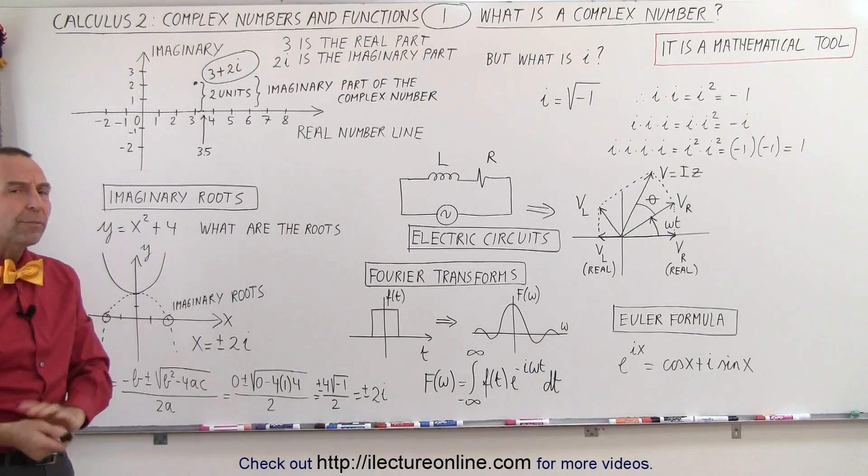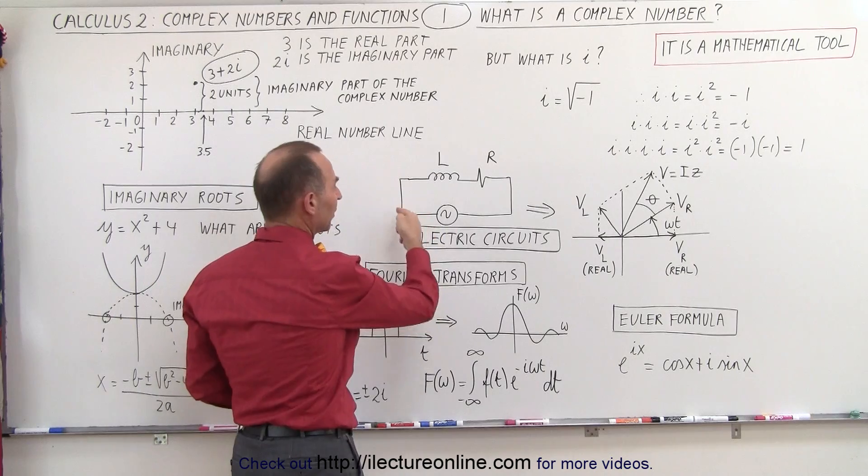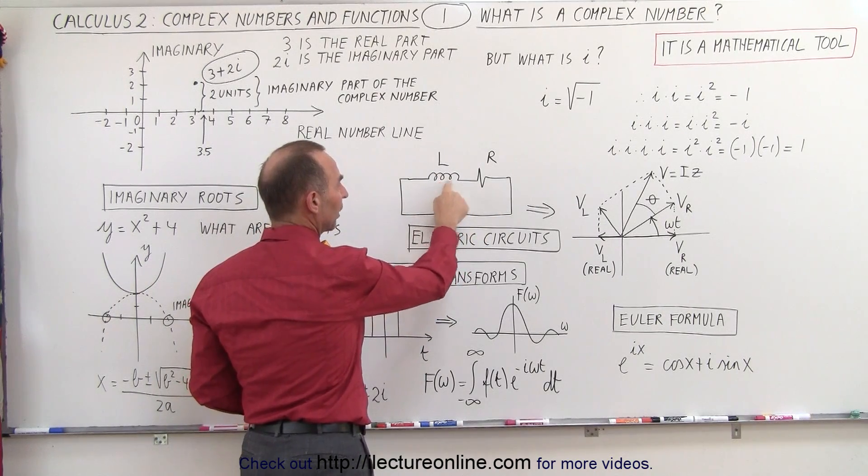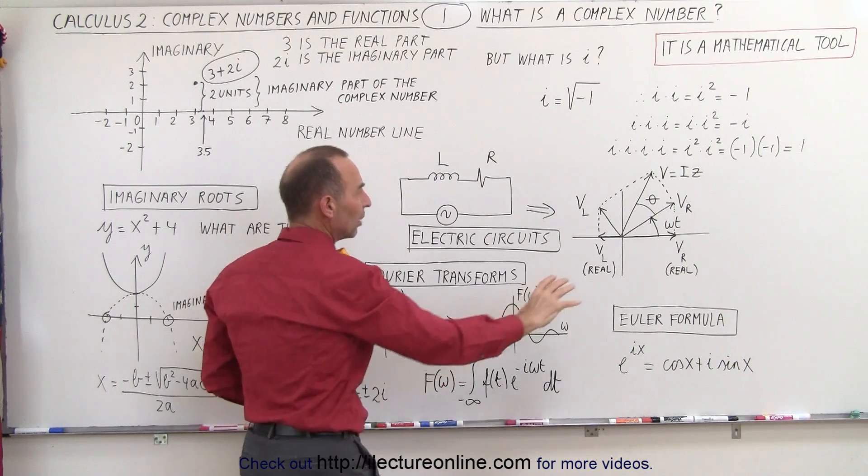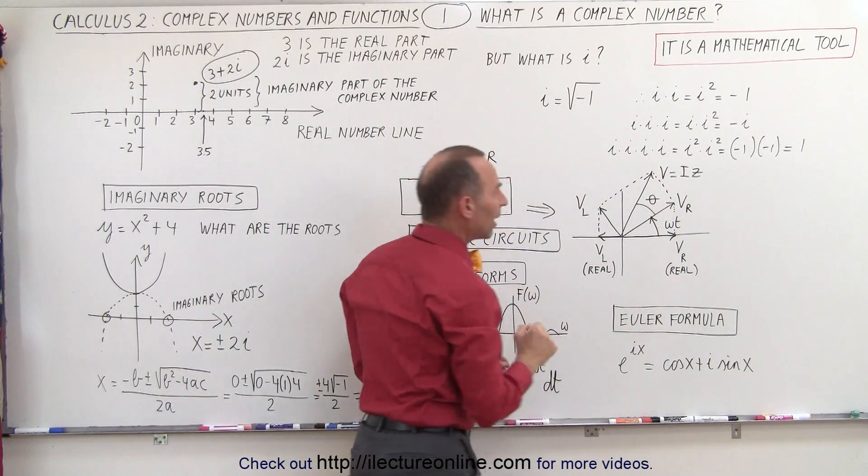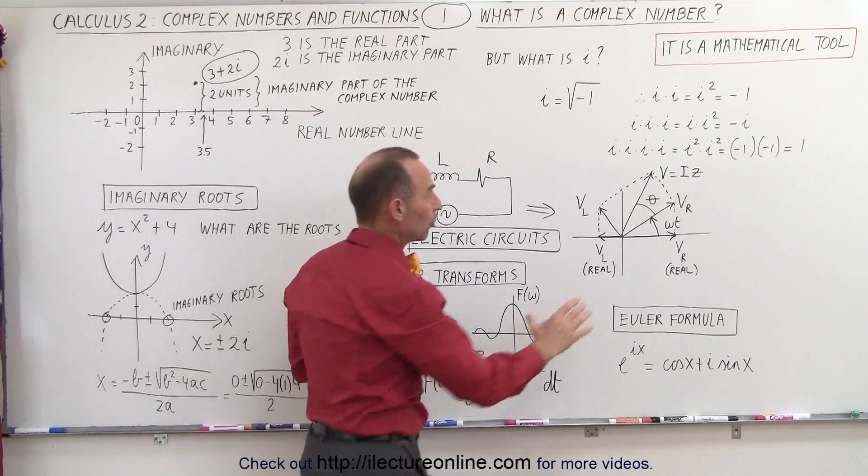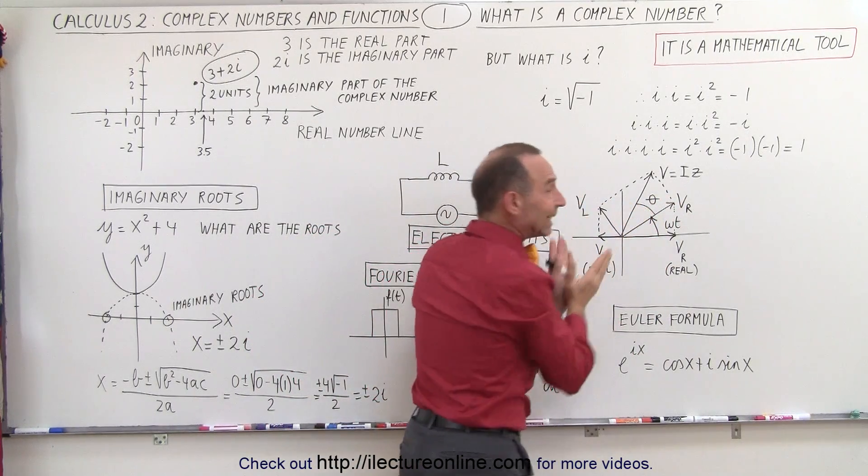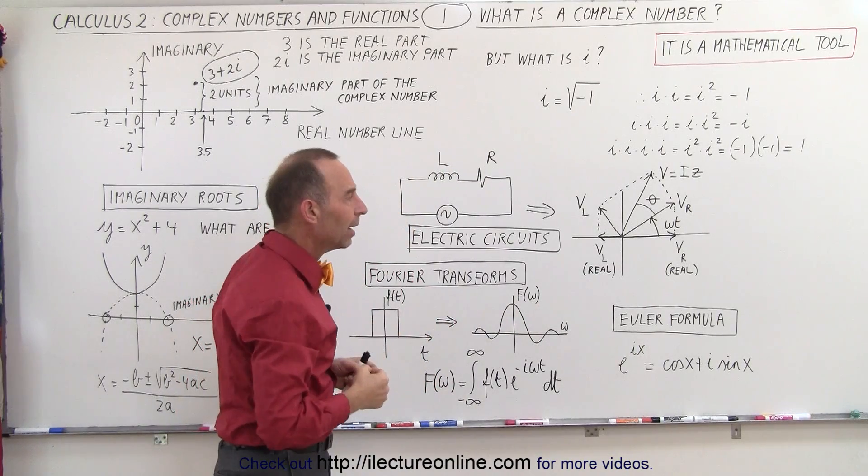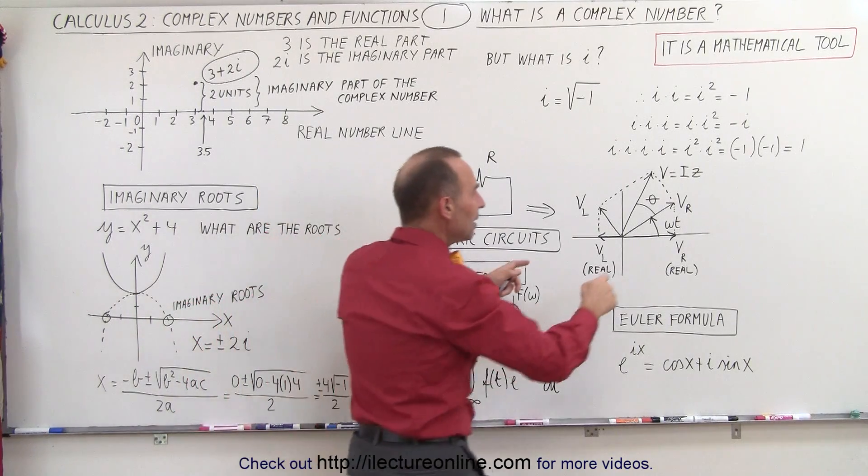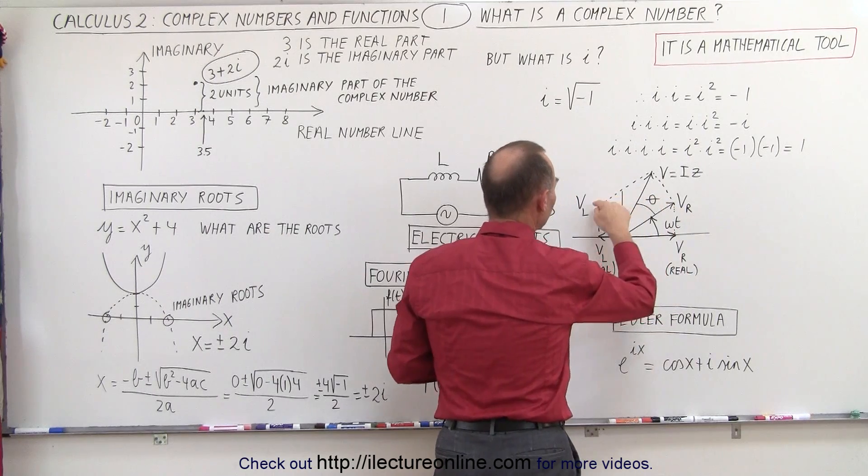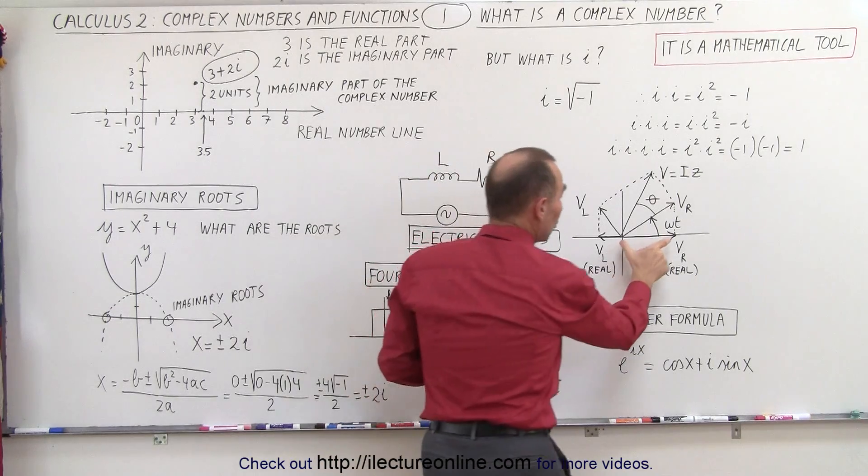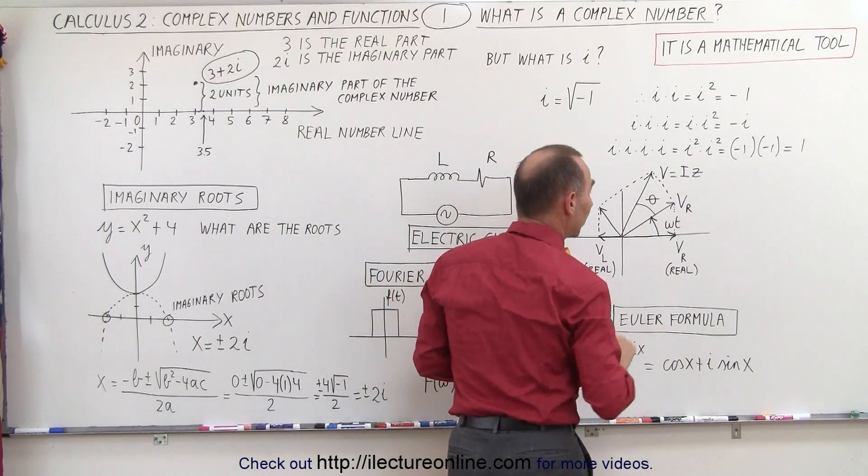We can also use imaginary numbers in electric circuits. For example, here we have a circuit with a time-varying voltage source, an inductor, and a resistor. We can then draw what we call here a phaser diagram that shows us the voltage across the resistor and the voltage across the inductor, but notice they're 90 degrees out of phase. They don't happen at the same time.